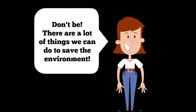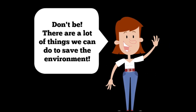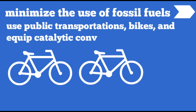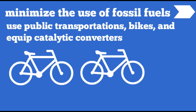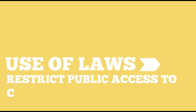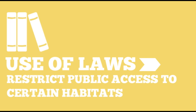There are a lot of things we can do to save the environment and save ourselves. By using public transportation, bikes, and equipping catalytic converters in our cars, we can minimize the use of fossil fuels. We could also increase the use of renewable energy such as solar, geothermal, wind, hydroelectric, and more. We can also make use of laws to restrict public access to certain habitats to reduce illegal hunting and poaching.